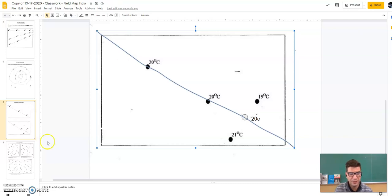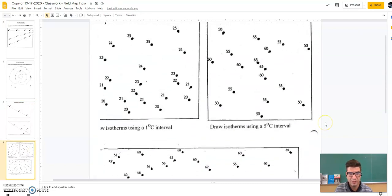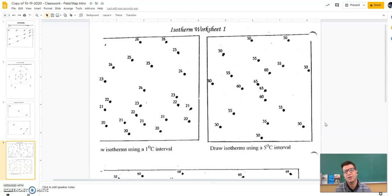Now, that wasn't a very complicated example, but the next one might be a bit more. So, you can see here we've got a mess of numbers on the left. Got a little bit cut off, but it says draw isotherms using a one degree Celsius interval. I like to start off at the bottom. You don't have to, but let's start there.